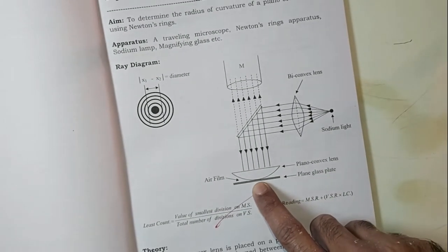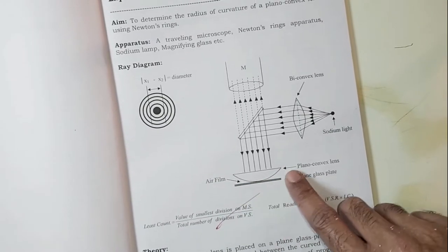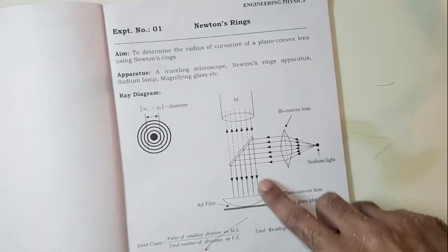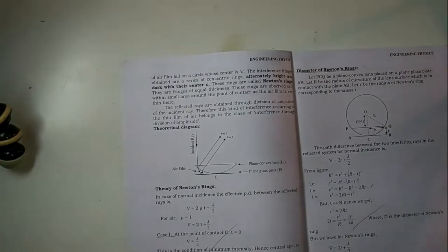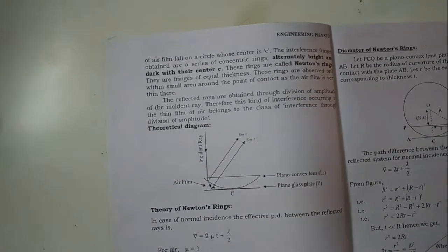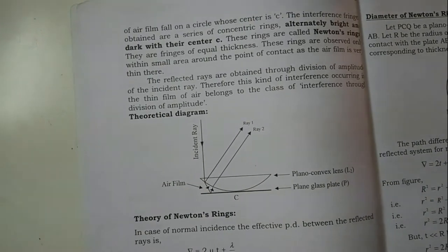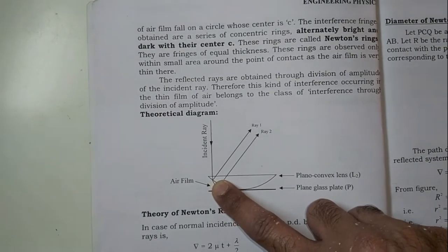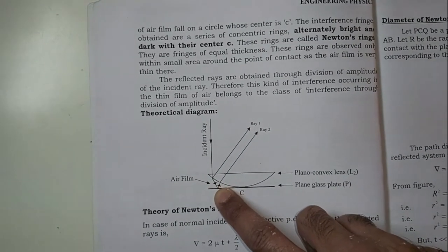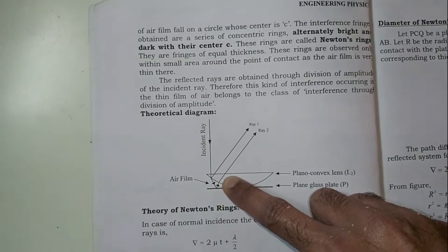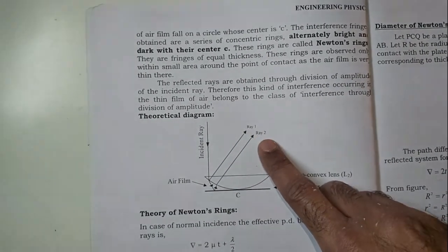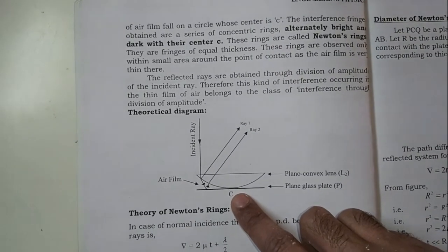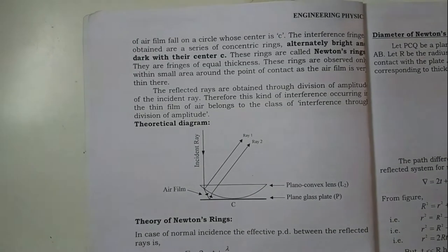At the point of contact, the thickness of the air film will be zero, then it gradually increases on either side. When such a film develops between the curved surface of the lens and the plain glass plate and is illuminated normally, the incident light will get partly reflected from the upper surface of the film and partly refracted. The refracted light again reflects from the lower surface, giving ray 1 and ray 2. The light reflected from the upper and lower surfaces will interfere, and alternate dark and bright rings will be seen in the field of view.